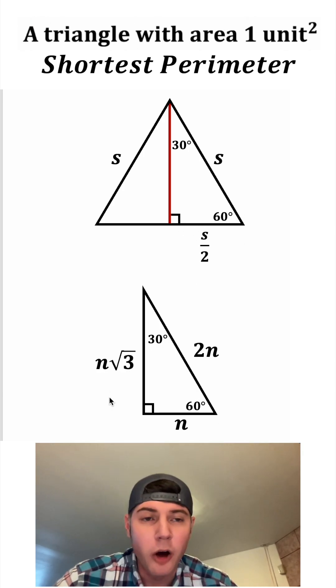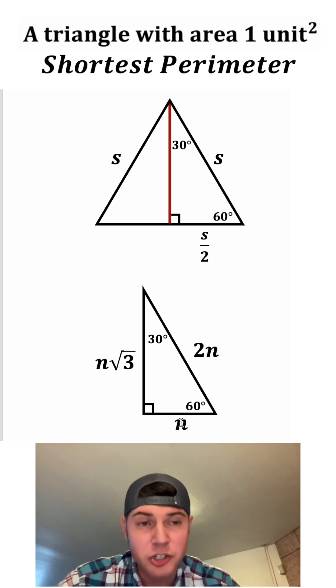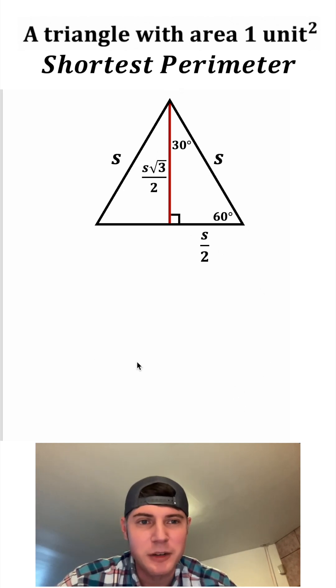And the side opposite the 60 will always be root three times the shortest side. So this red line right here will be this S over two times the square root of three. Now we have all three sides of this triangle and we don't need these notes anymore.